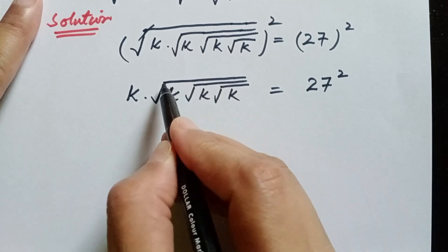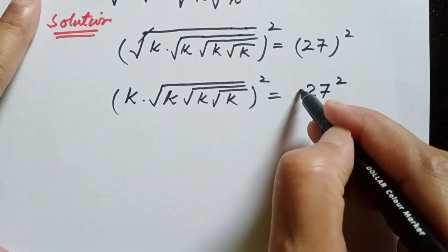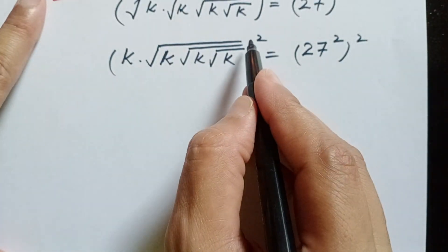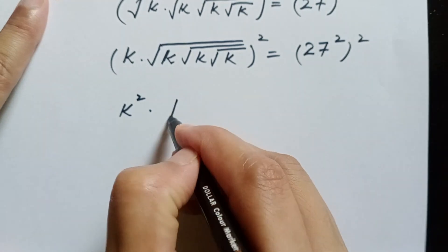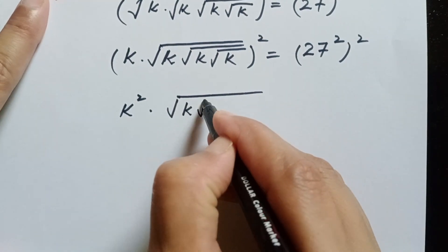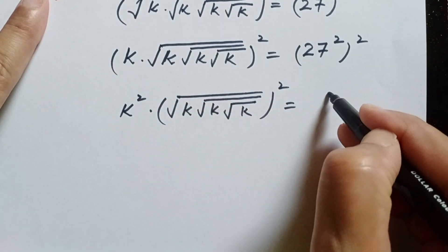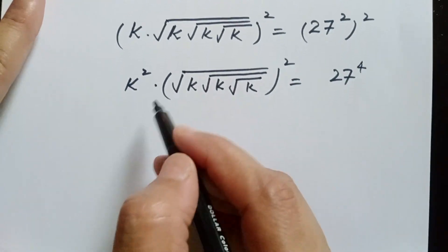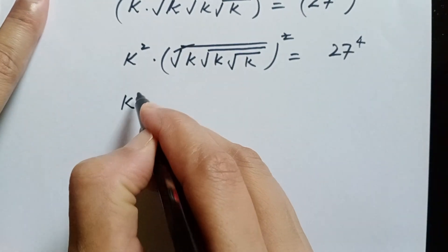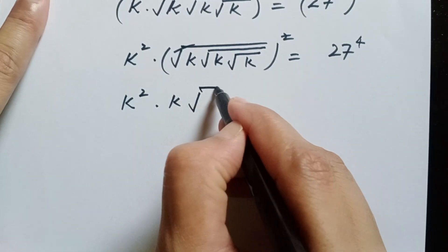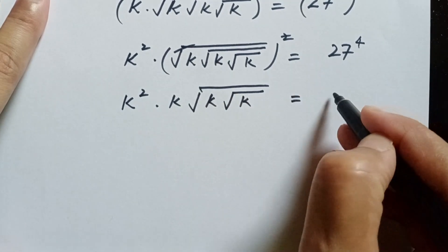Now in the next step we will again take the square on both sides to remove this square root, by squaring both sides. We will get k times square root of k times square root of k, and squaring the right side gives 27 to the power of 4. So here we have k squared, and this square root cancels with 2. We will have k squared times k times square root of k times square root of k is equal to 27 to the power of 4.